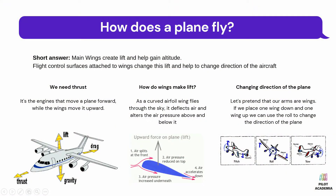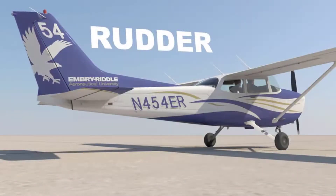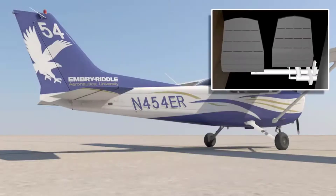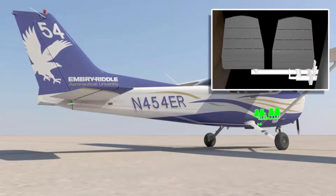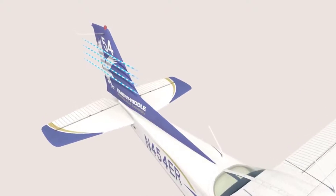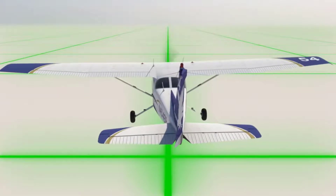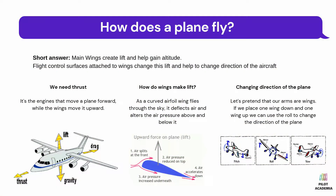Yaw is the turning of a plane to the right or left direction. When the rudder is turned to one side, the airplane moves left or right — the airplane's nose is pointed in the same direction as the rudder. This part of the airplane is called the rudder.